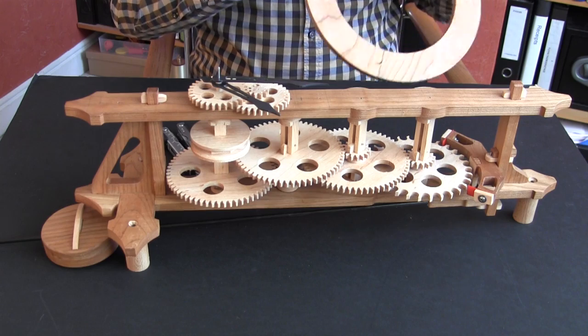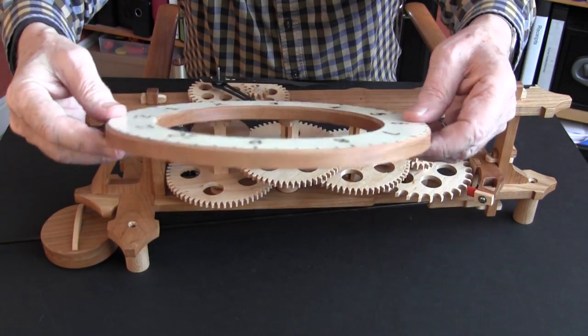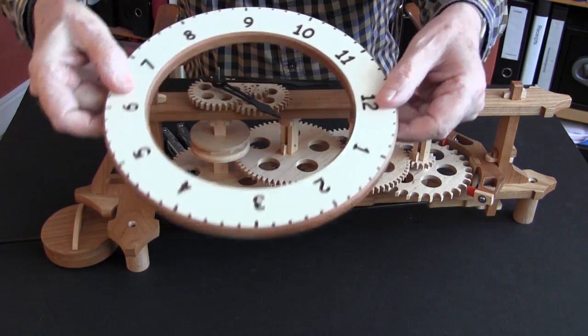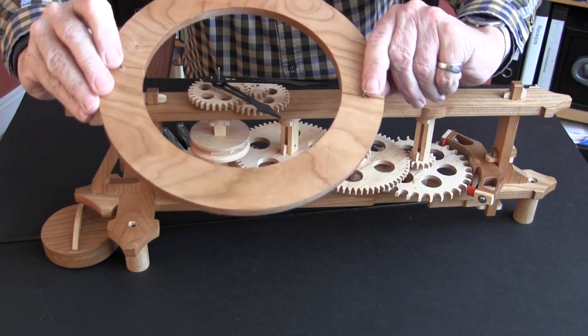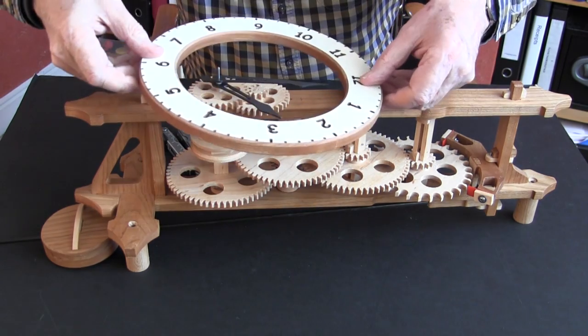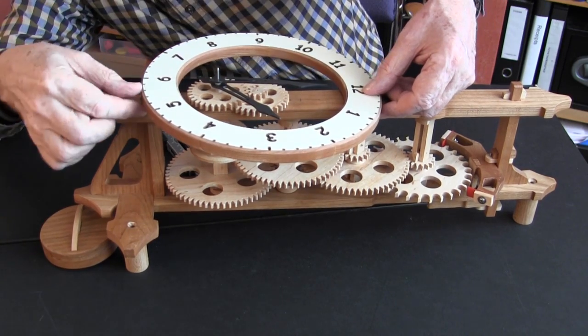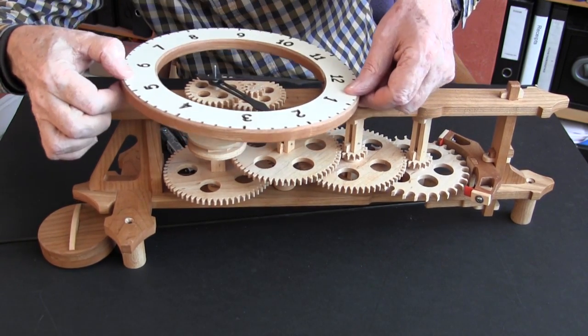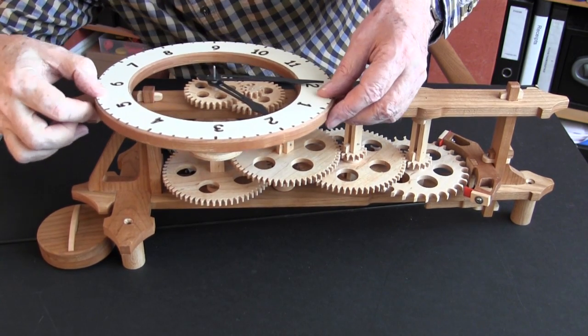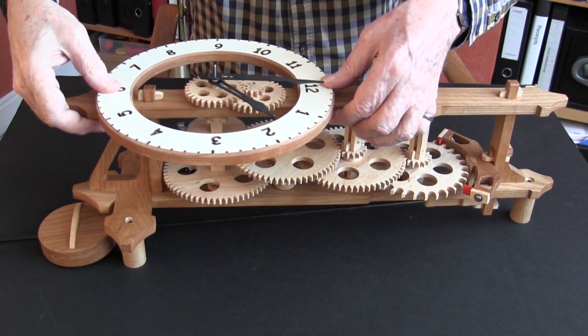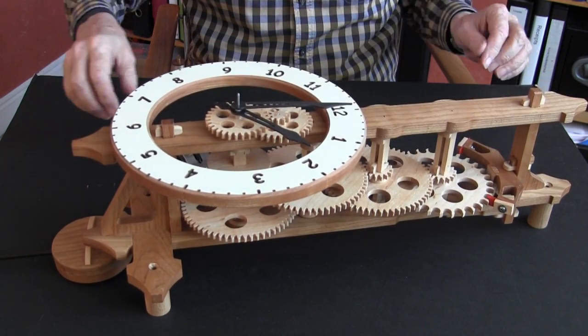Now all we need is for the dial to be fitted. Get it the right way round. And it fits two pins in the back, which you've drilled previously. And that fits when I get it in the right holes, like so. And you can glue that in place so that it doesn't move.